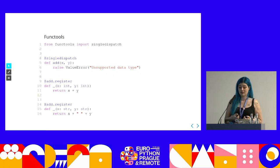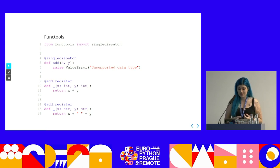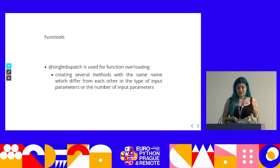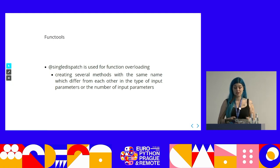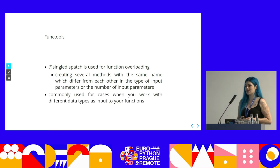There might be a better approach using the standard library. Here we have a singledispatch decorator above the function add on line 4. We then specify the behavior for each type in a separate function. If the user enters integers, the function on line 10 runs and adds them together. If strings are entered, the function on line 15 runs. For all other data types, the ValueError defined on line 6 is raised. Singledispatch is used for function overloading — creating several methods of the same name that differ in the type and number of input parameters.